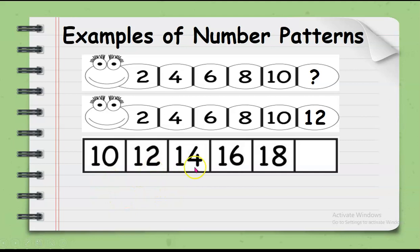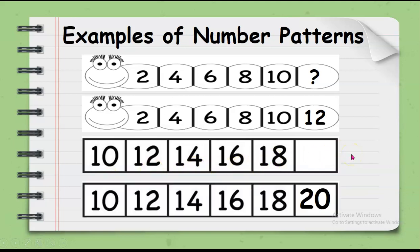We also have 10, 12, 14, 16, 18. What's the missing number? There, it's 20 because we still follow the number pattern for skip counting by 2.